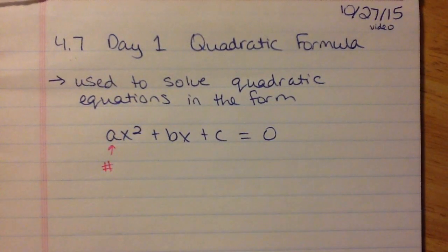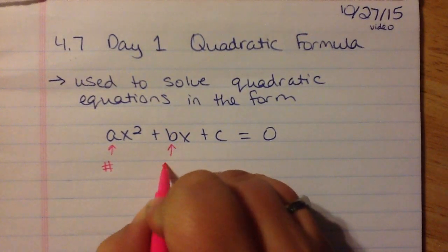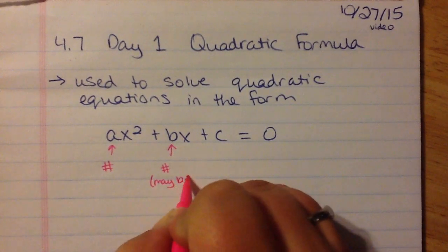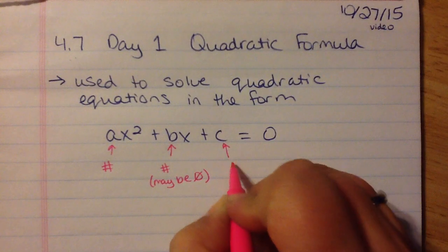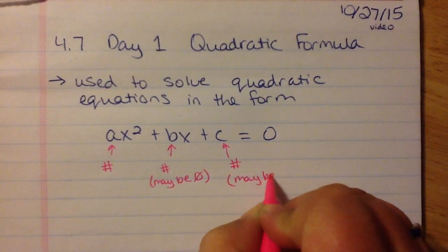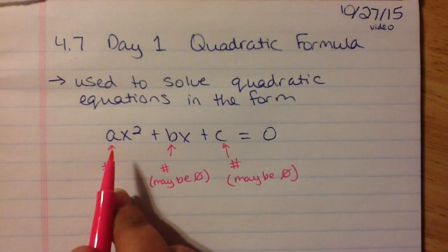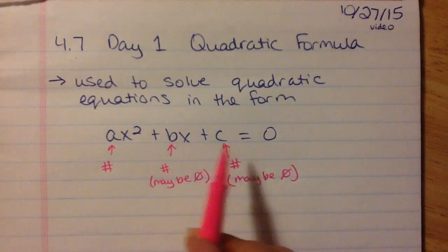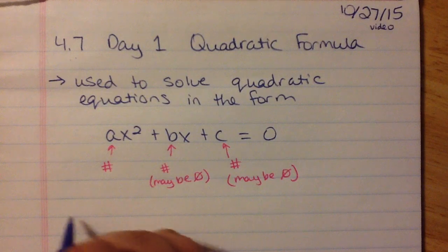A will be a number, and remember it's always in front of the x squared. B will be a number, but it may also be zero. And c will also be a number, but it also may be zero. So a is the only one that has to absolutely be a number. You will have x squared, and b and c may or may not be there, but remember it has to be set equal to zero before you start.